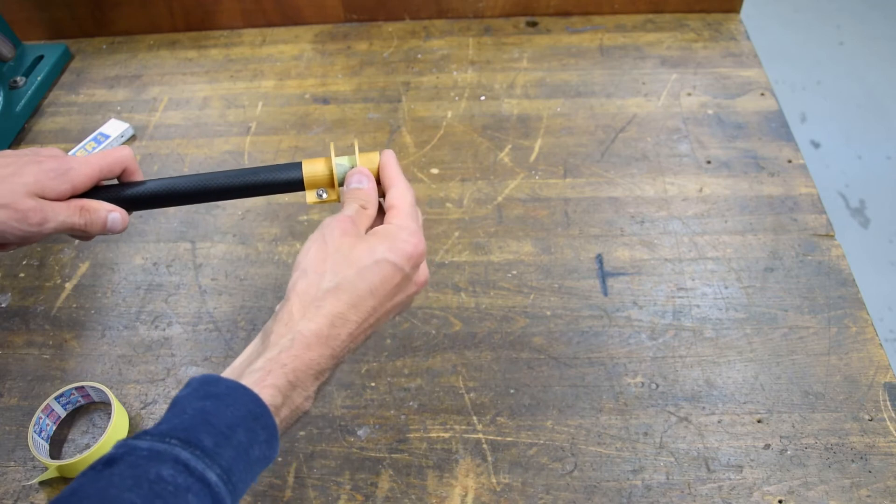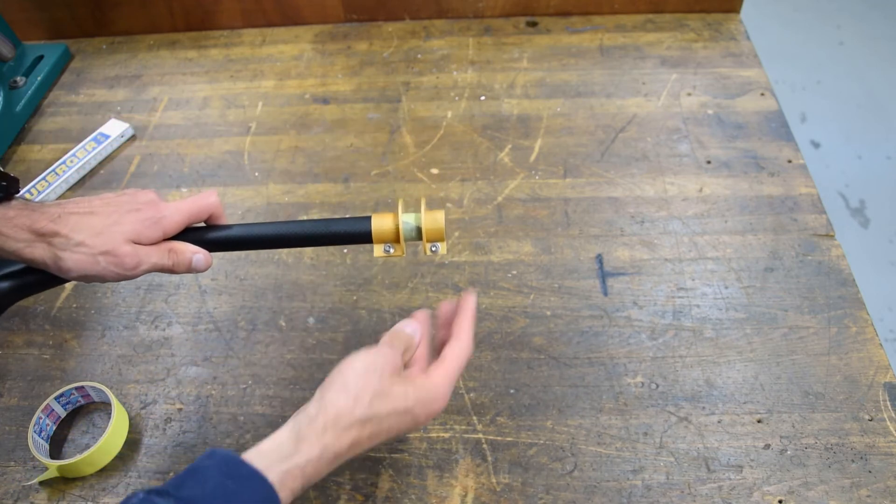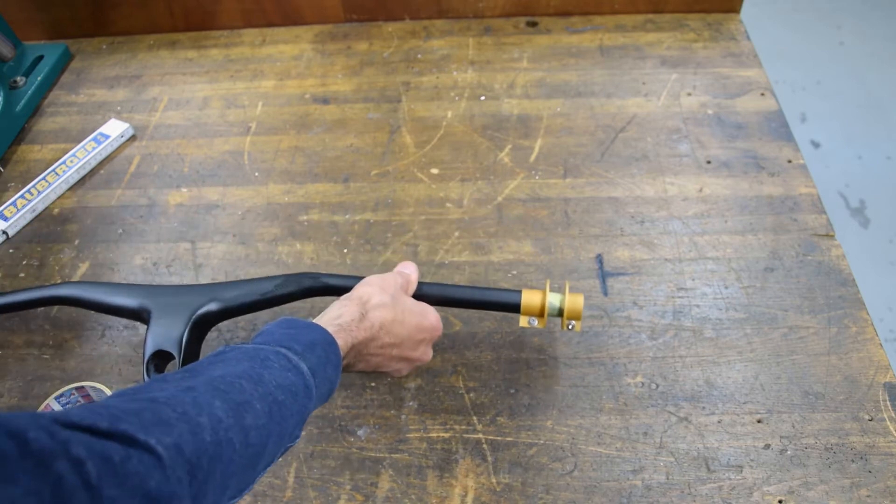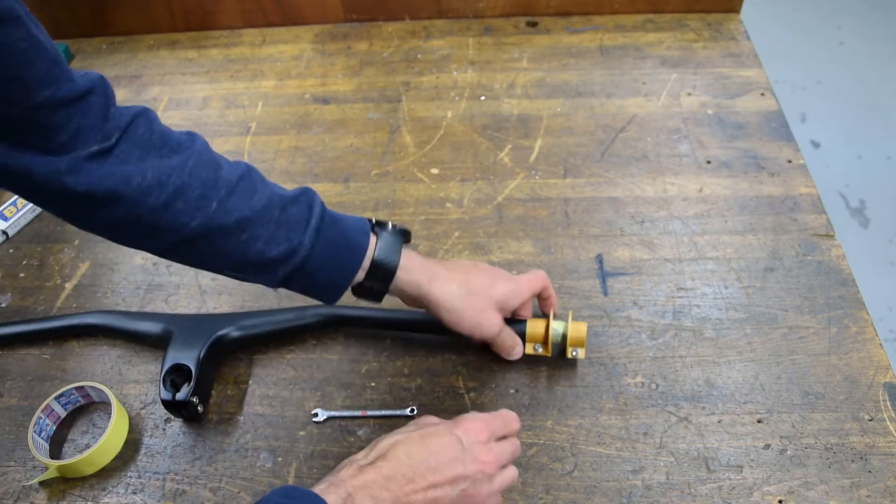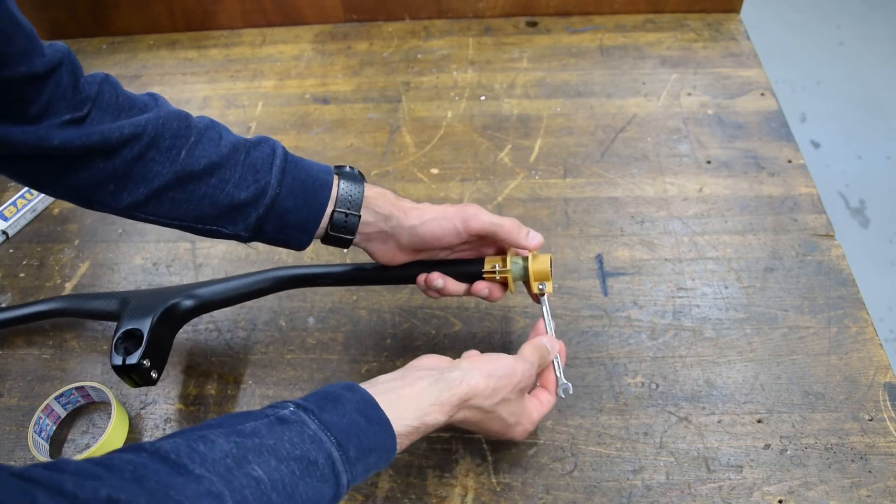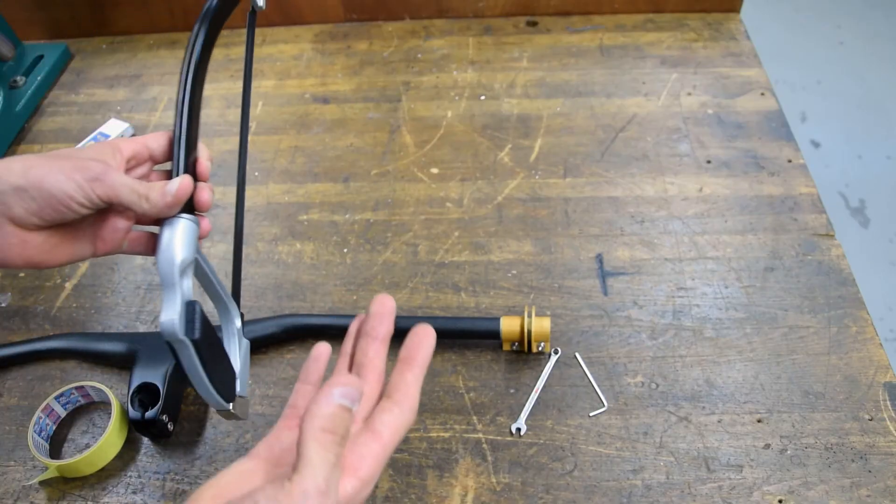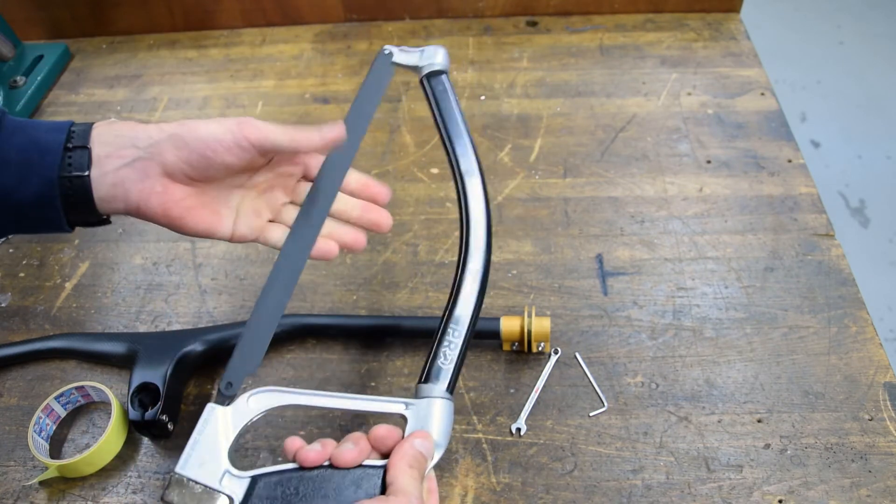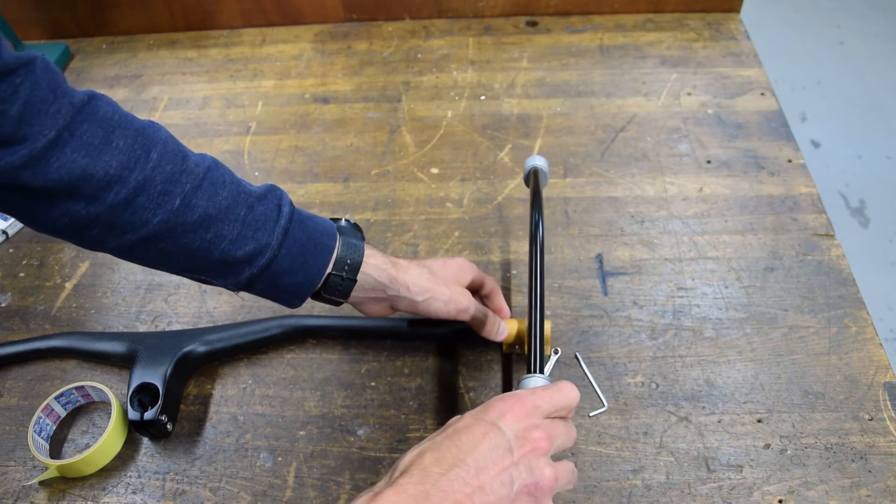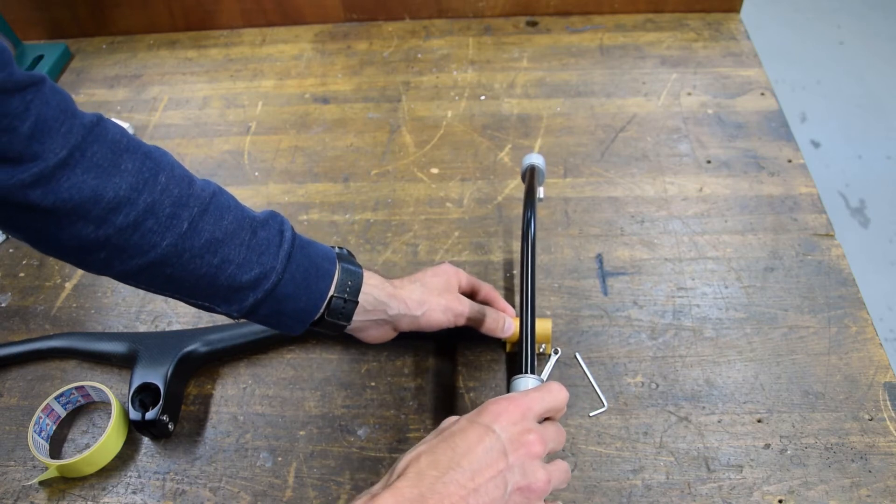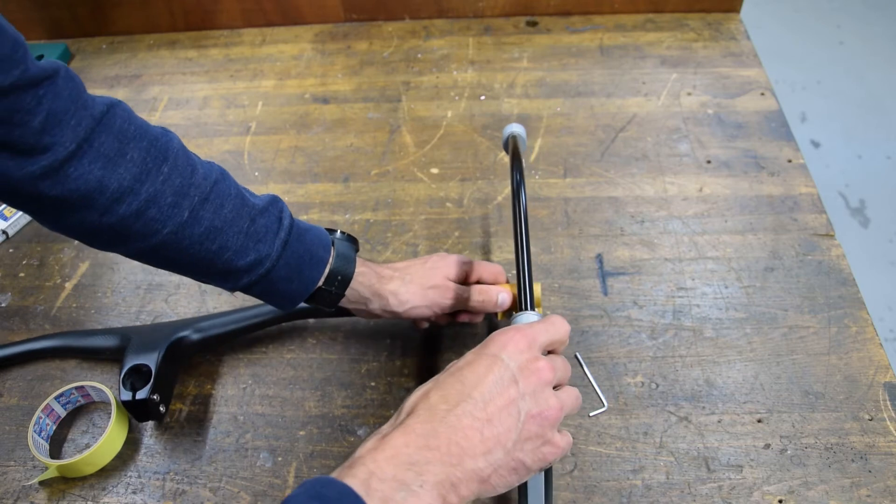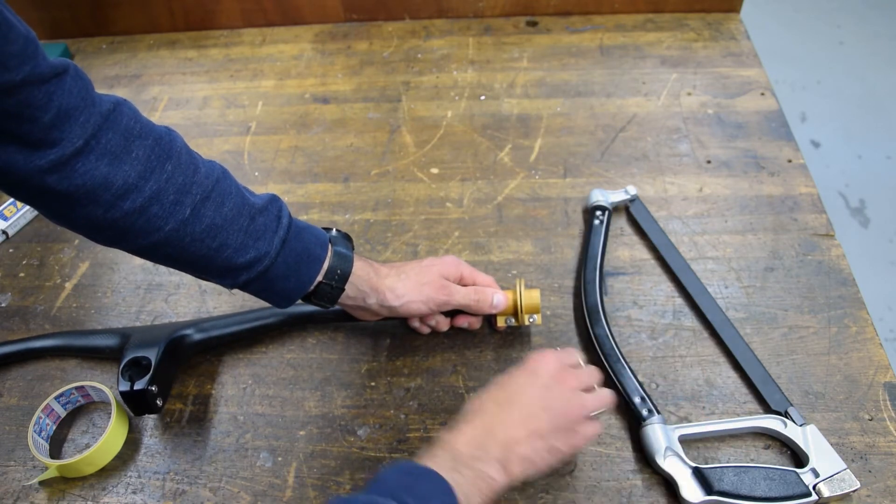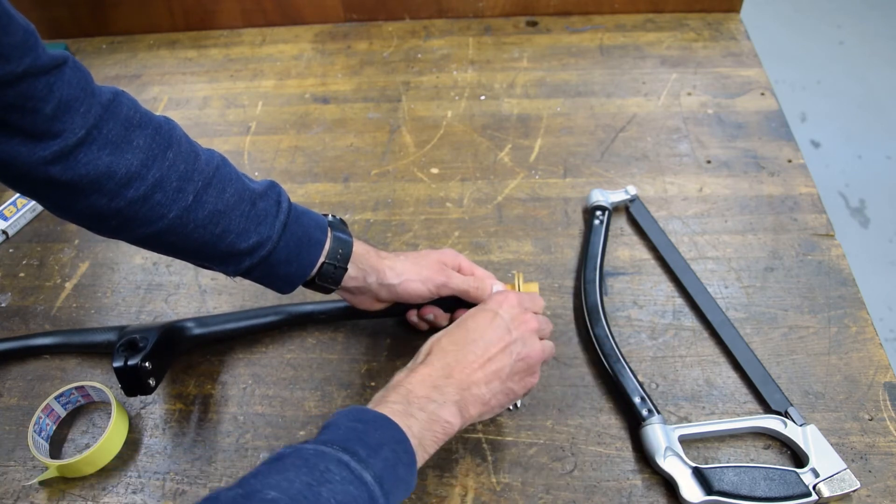As you can see here it matches exactly to my marked line. So let's tighten it up. I tighten now one side and I have here my special carbon saw. I will use the thickness of the blade to determine the gap between the two guides and then also mount this side.